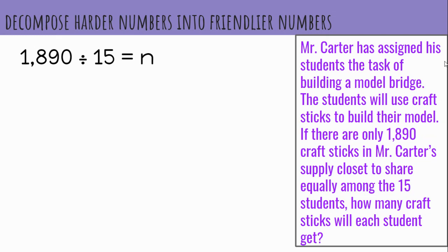So considering our multiples of 15, what multiple of 15 can be used to help decompose 1,890? Well, knowing that 15 times 1 is 15, so 15 times 10 is 150, 15 times 100 is 1,500. I can use 1,500 as part of the dividend as part of that decomposition.